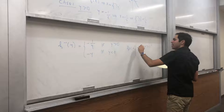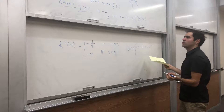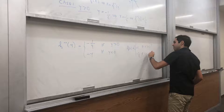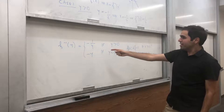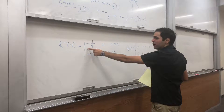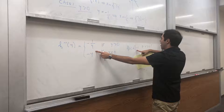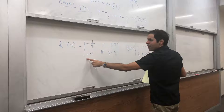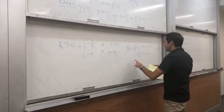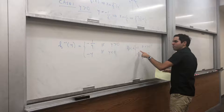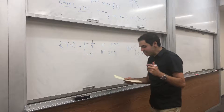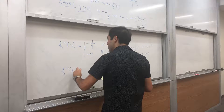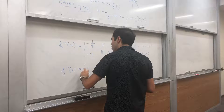Now let's compare with the definition of f of x. Remember, f of x was minus x if x was positive, and minus 1 over x if x was negative. Notice that f inverse of y equals minus 1 over y, which is 1 over minus x; and f inverse of y equals minus y, which is also 1 over minus 1 over x. So indeed, f inverse of x equals 1 over f of x.